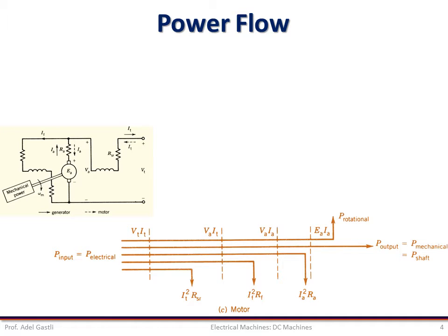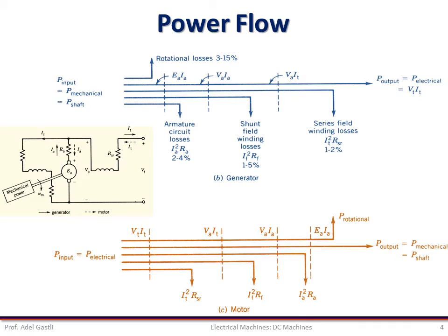For the case of a compound generator, the input power is mechanical and the output power is electrical. The first losses are the rotational losses — mechanical losses — then the remaining mechanical power is converted into electric power through electromechanical energy conversion. The electric losses are similar to those for a motor: armature circuit losses, shunt field winding losses, and series winding losses. Finally, the output electric power is VT × IT. Using the equivalent circuits of different DC machine types, we can easily develop the power flow diagram for any DC machine, motor or generator.